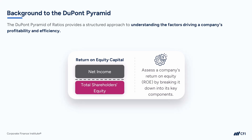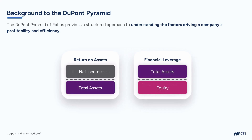What's really cool is that it provides a structured approach to understand the factors driving a company's profitability and its efficiency. The standard DuPont pyramid has three levers, which we will get into in just a second. But we'll start by breaking down ROE into two levers or two ratios. The trick is that when these two ratios are multiplied together, we end up with return on equity.